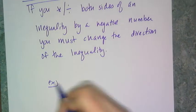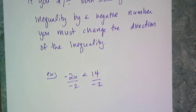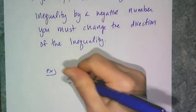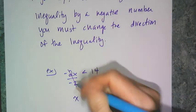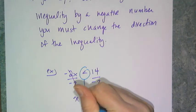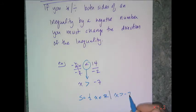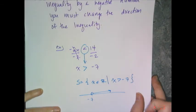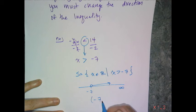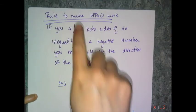For example, if I have negative 2x is less than 14 and I choose to divide both sides by negative 2, since I'm dividing by a negative number, I get x and 7 — but this symbol must change direction. Therefore my solution set is x is greater than negative 7. On the graph, you have a negative 7 with an open dot, and greater than goes in that direction. In interval notation it would be open parenthesis, negative 7, comma, infinity, close parenthesis.